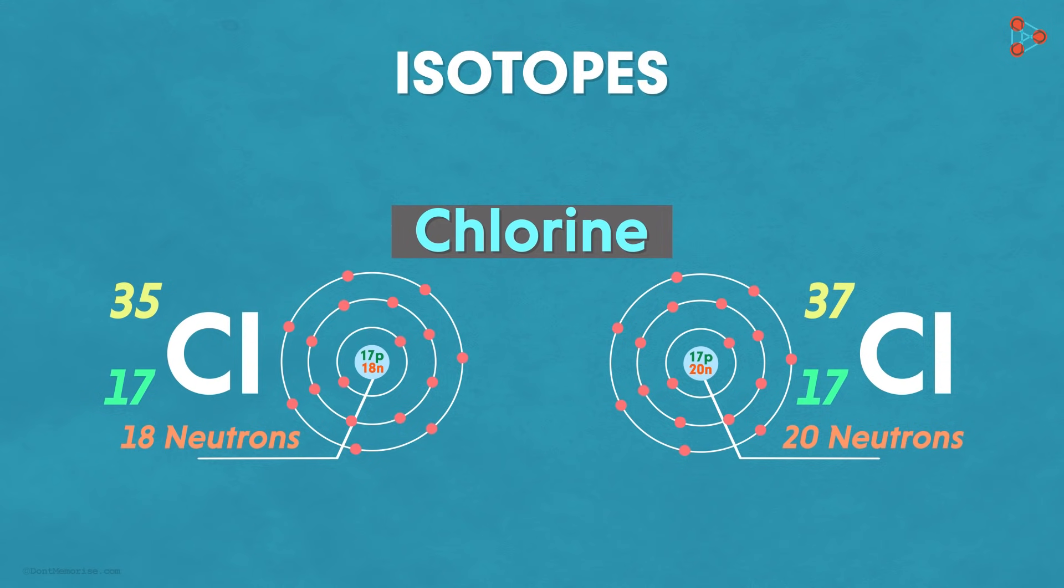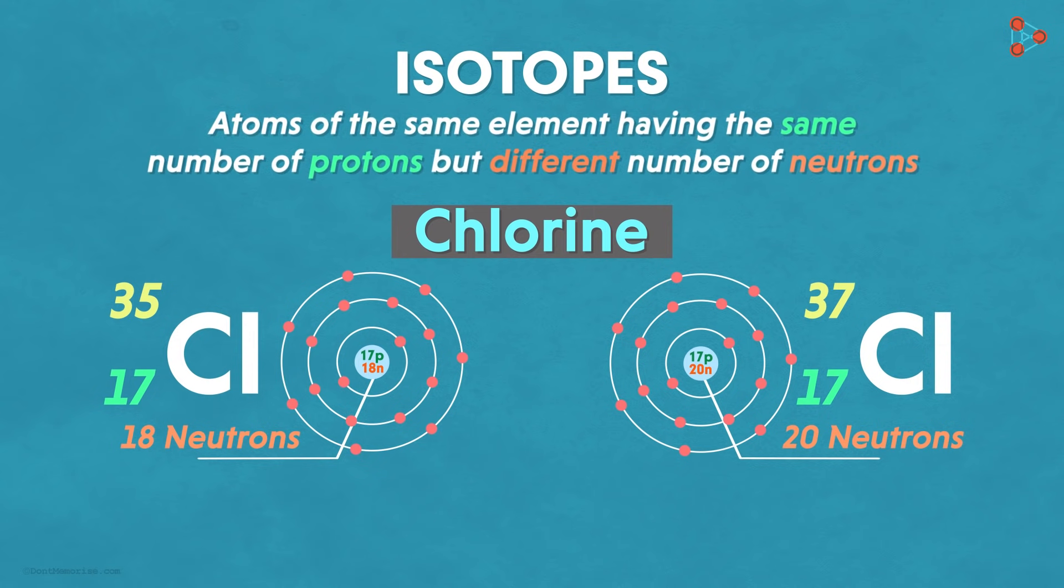In simple words, isotopes are defined as the atoms of the same element having the same number of protons but different number of neutrons. Same number of protons but different number of neutrons.